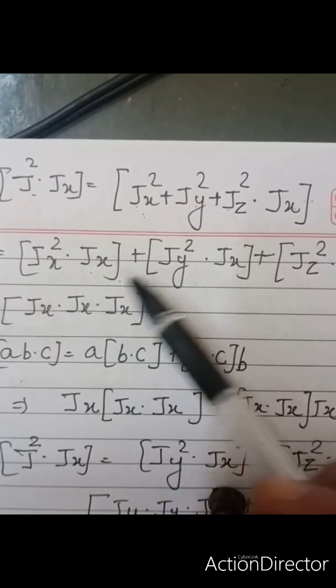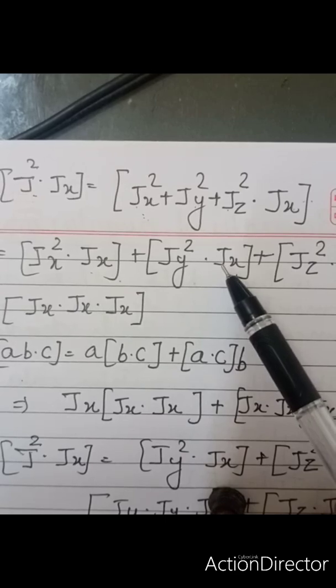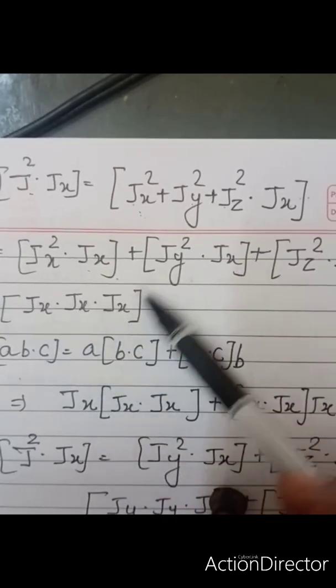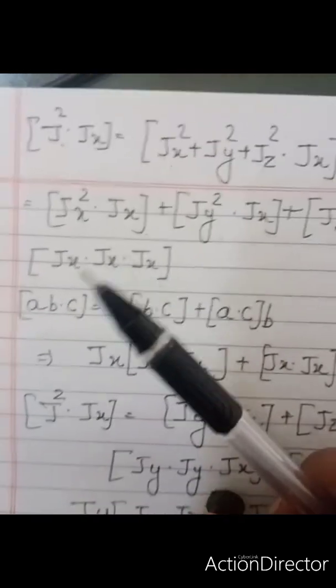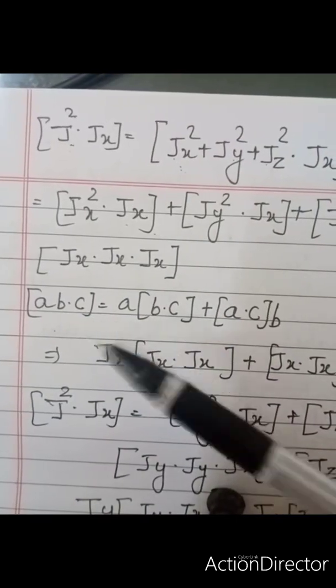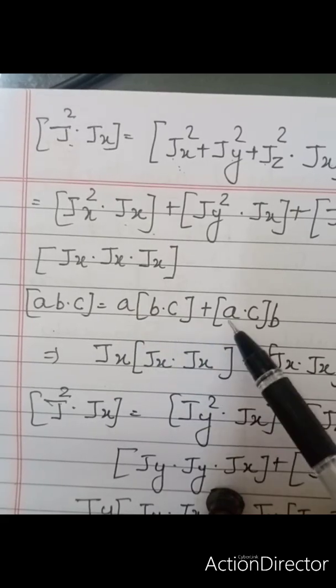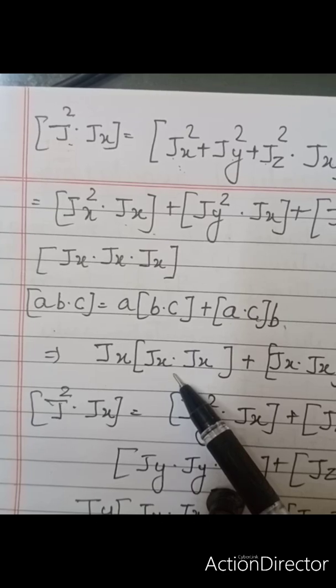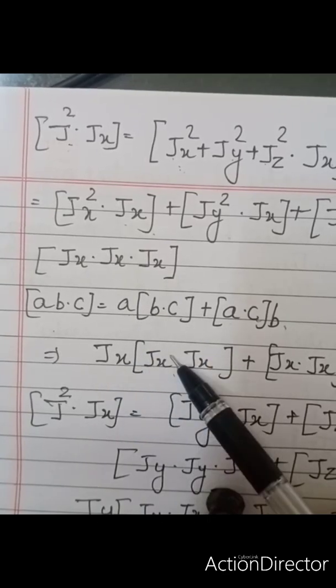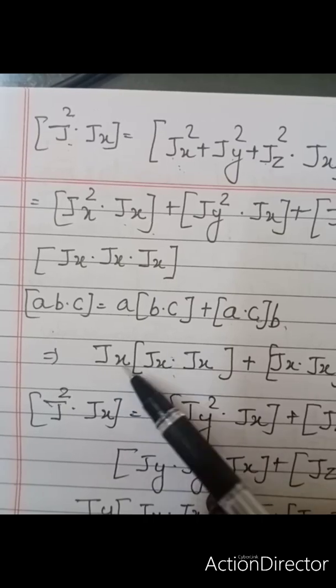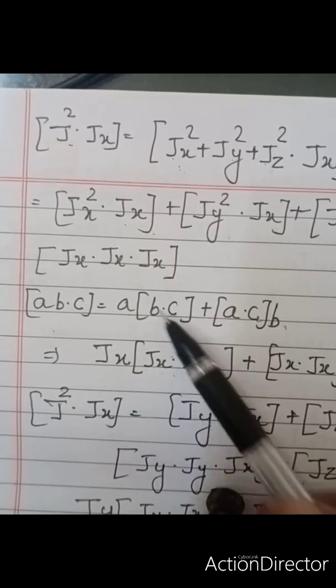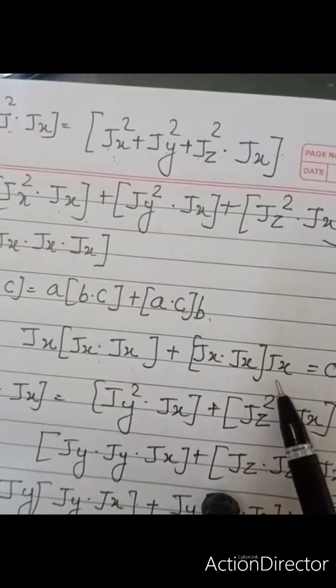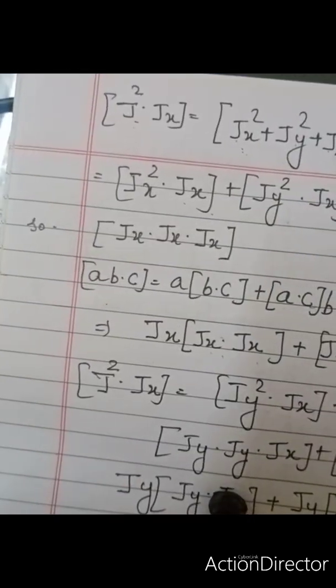You can write this JX, JX, JX together. This is just like ABC if you are taking together. It will be ABC or you can write plus ACB. Similarly, we are taking this also like that. Since it is JX, we will get same thing inside and outside the bracket: JX, JX, JX, JX and JX. So that should be equal to 0.